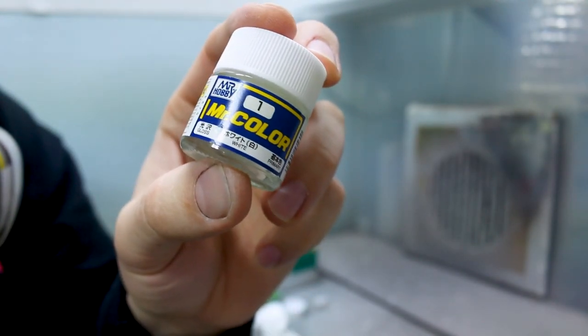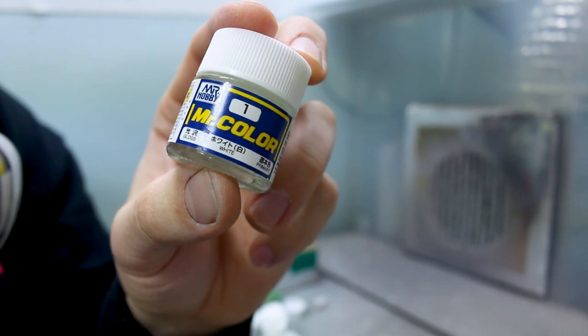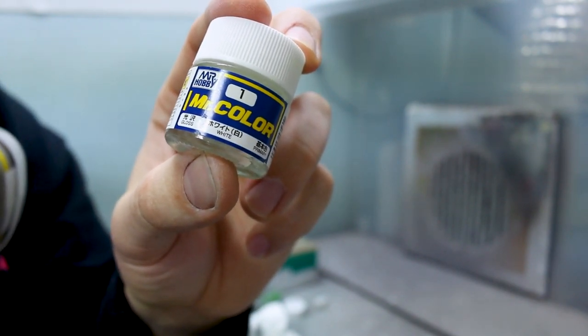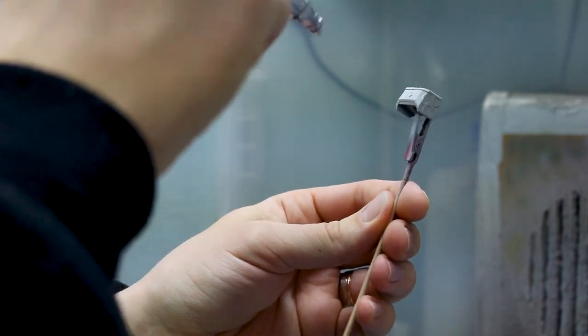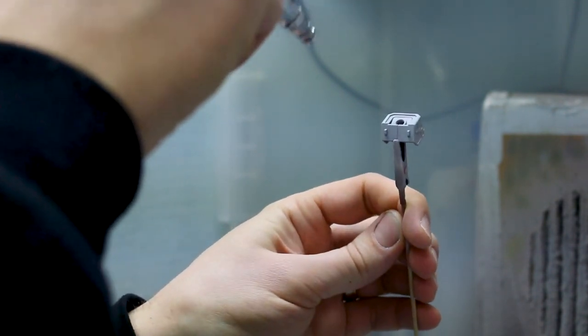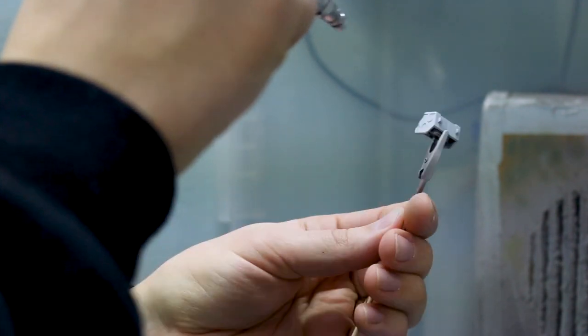All right, next up for the one that we're going to do with white lining, I'm just going to use here Mr. Color number one, Gloss White, simple enough. Again, if you're not using an airbrush, you can use just white spray paint.